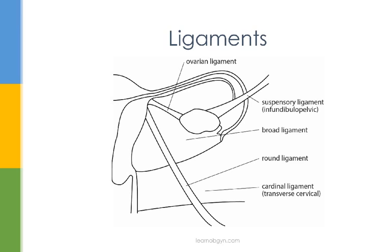Next we have the round ligament, which connects the uterus from the cornua, through the inguinal canal to the labia majora. During pregnancy, this ligament can be stretched, leading to pain that increases with movement and decreases with rest. It is a diagnosis of exclusion and can be treated with rest and acetaminophen.